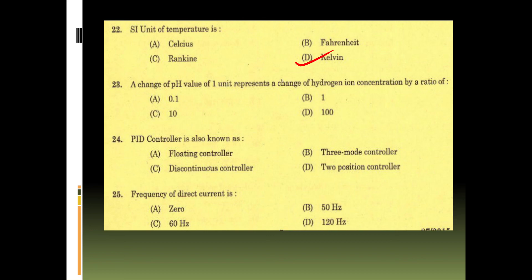Twenty-third question: change of pH value of 1 unit represents a change of hydrogen ion concentration by a ratio of 10. PID controller is also known as three-mode controller. Twenty-fifth question: frequency of direct current, which is 0, okay?